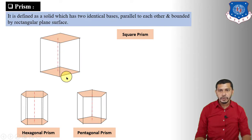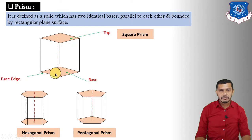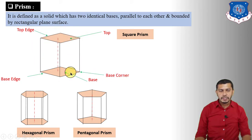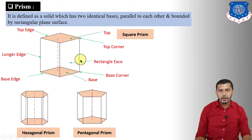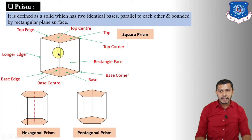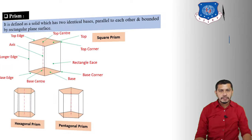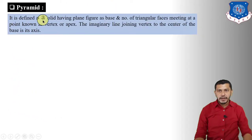The dimensional parameters of a prism include the base, the top face, the base edge, the top face edge, base corners, top corners, top edges, side edges (also called longer edges), rectangular or side faces, top face center, base center, and the axis — the imaginary line connecting the top face center and base center.